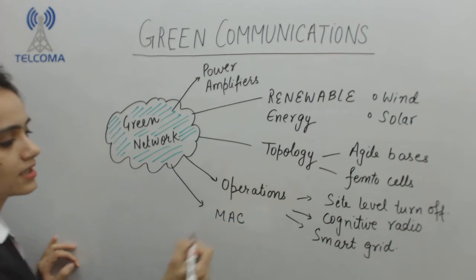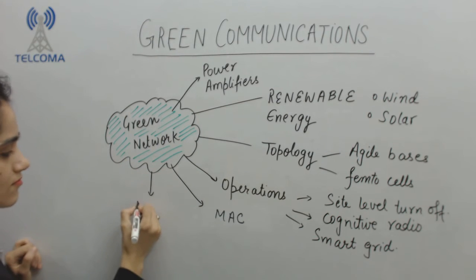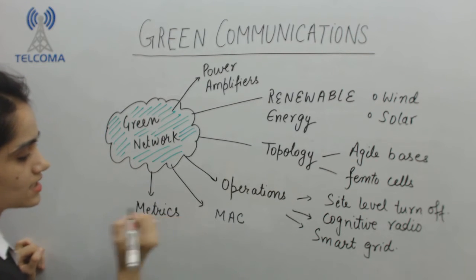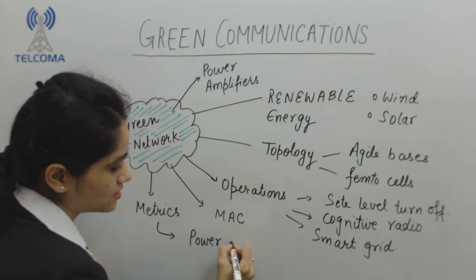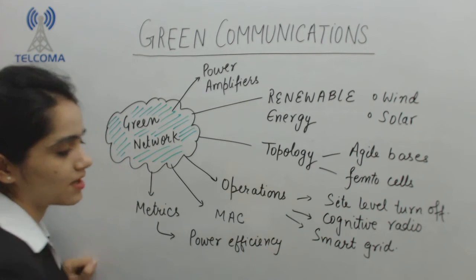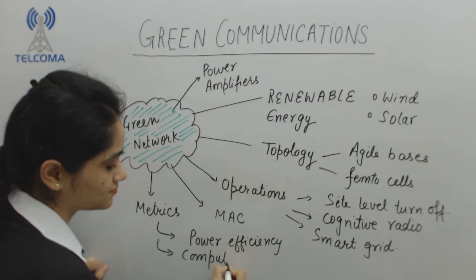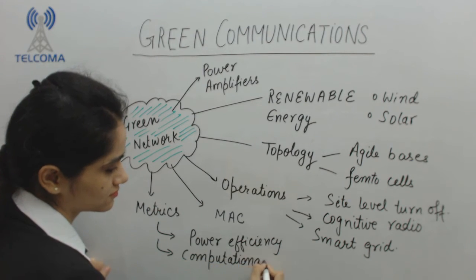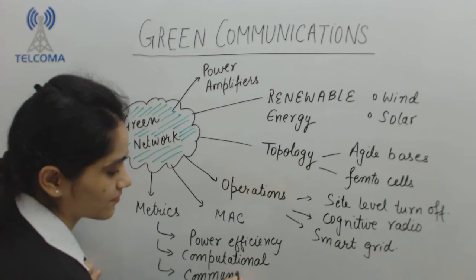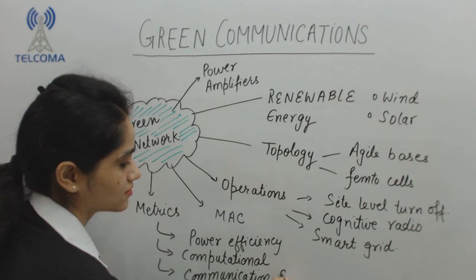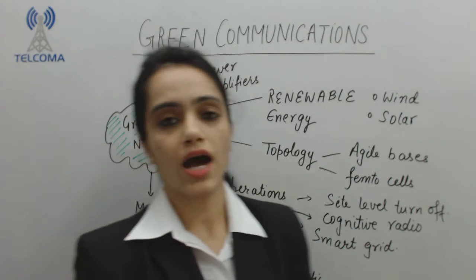Another aspect in green communication is metrics. In these metrics, the things we need to take care of include power efficiency. Our network should be computational and communication specific.